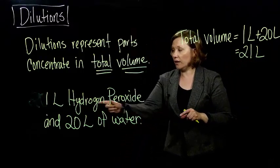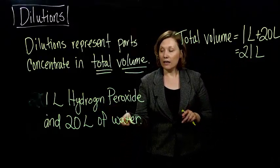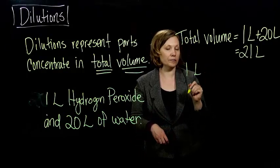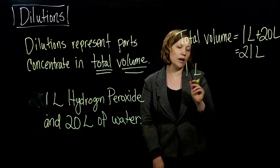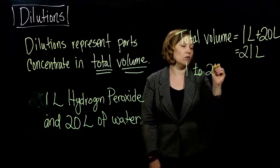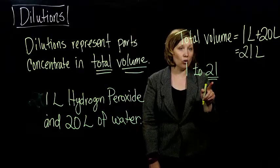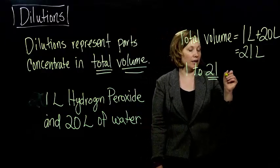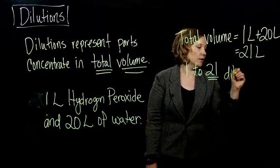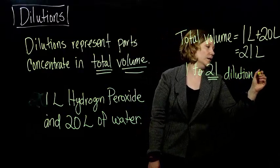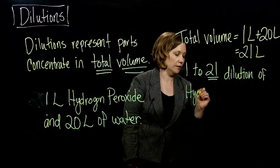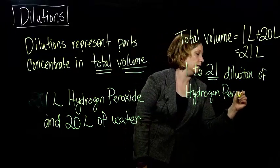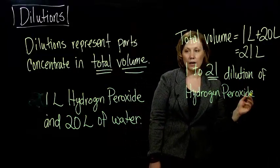So the dilution of the hydrogen peroxide is not one to 20, but it's one liter, it's a one to 21. Our total volume, not the volume of the solvent, but our total volume, one to 21 dilution of hydrogen peroxide in water.